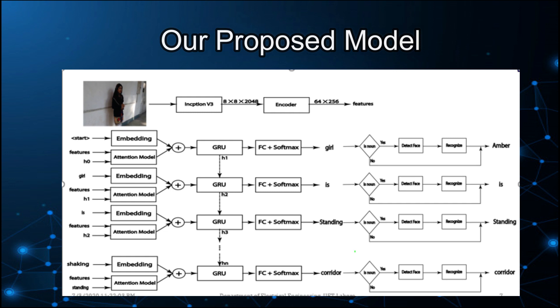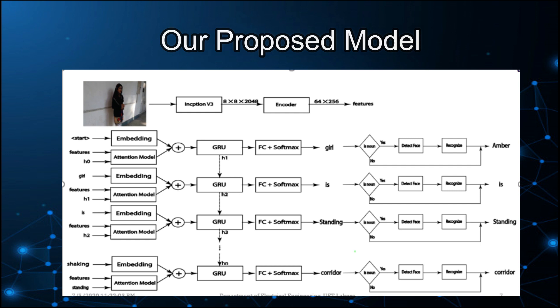An attention mechanism attends to this feature vector at each time step to produce a context vector. The context vector and embedding vector both feed into an LSTM network at every time step to generate output. We have used 512 GRU units as a decoder.